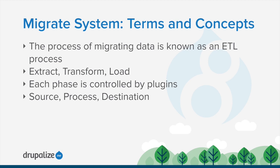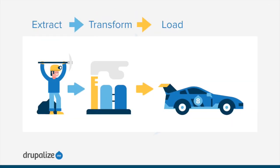To illustrate that with a couple of graphics: we have a miner representing the Extract phase, a factory for the Transform phase, and a Drupal 8 race car for the Load phase. In Drupal terms, source plugins control the Extract phase, process plugins control the Transform phase, and destination plugins control the Load phase.